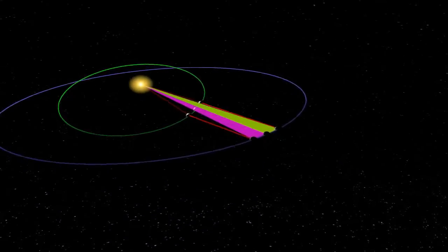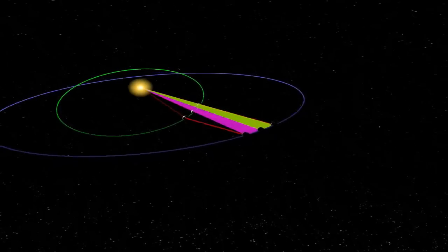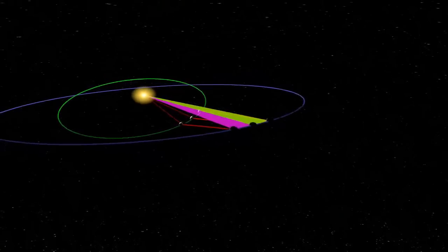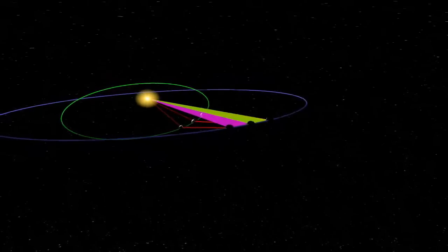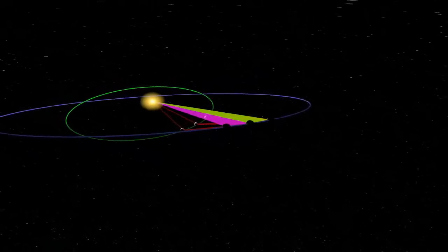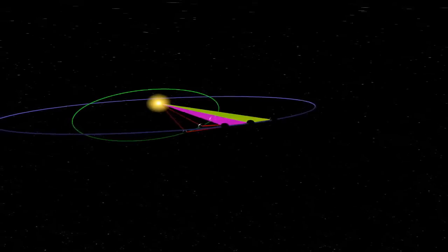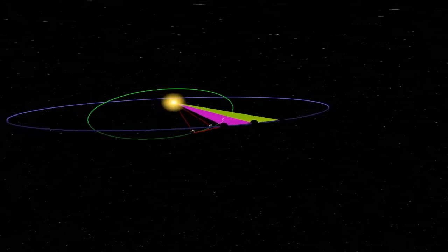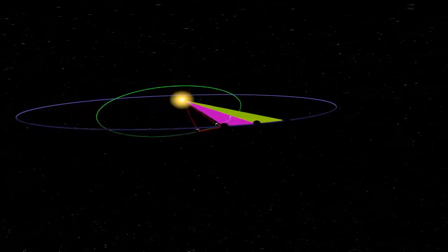Kepler's second law states that the area between any two sun-to-planet distances in the planetary orbit will always be in proportion to the amount of time the planet takes to traverse that arc. A moving planet will traverse equal areas in equal times. The area is the time.